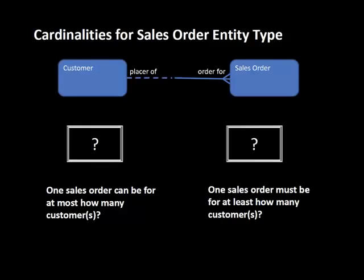Then we looked at reading the relationship from the opposite side. Up to now we were reading from the customer's side — what are the cardinalities for customer? But the diagram also has cardinalities for sales order. The lower limit for sales order is one: a sales order must be for at least one customer. You can't have a sales order sitting out there without a customer.